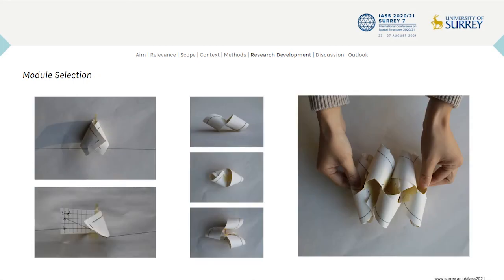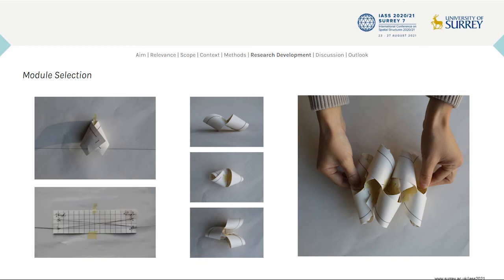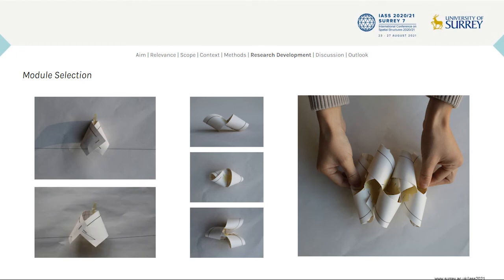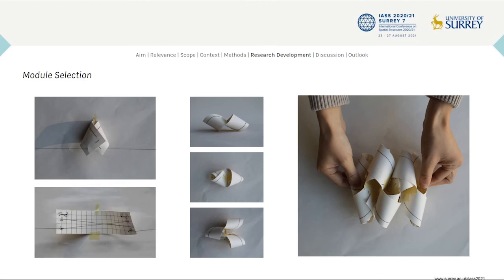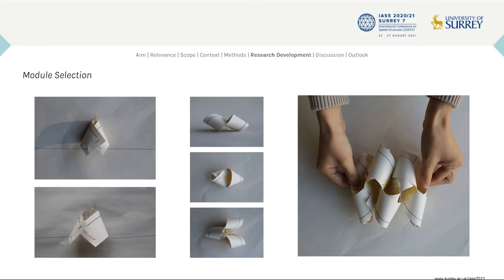Various modules were tested and evaluated to understand how a simple tensioning process can control various physical states, and how the modules could be aggregated into a doubly-curved shell structure. Some modules, as shown in this slide, have too extreme a curvature, which made scaling to a stiffer material not viable. Even though these modules stack easily, they are not appropriate for transfer to architectural scale.